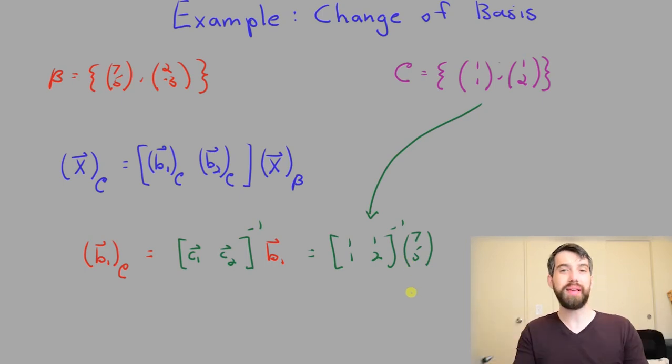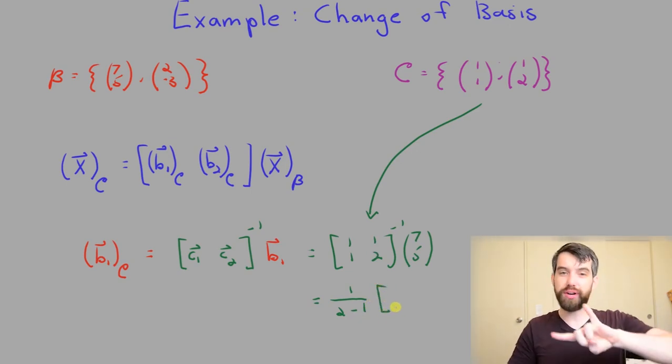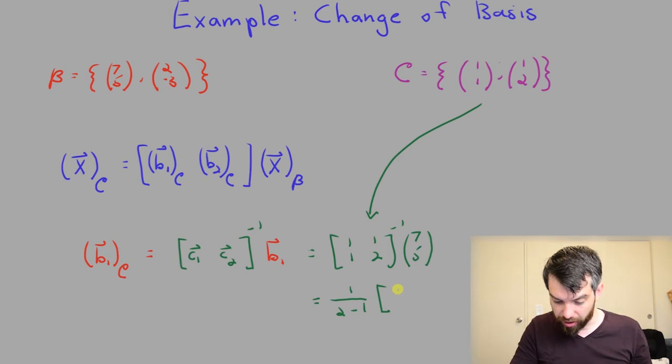This is going to be the inverse of 1, 1, 1, 2. In other words, I've taken this C basis and I've put those in for the columns. And then I'm going to be multiplying by my B1, and my B1 is 7, 5. Remembering again that when I talk about my basis vectors and I don't put a subscript, it's because I'm referring to them in the standard basis.